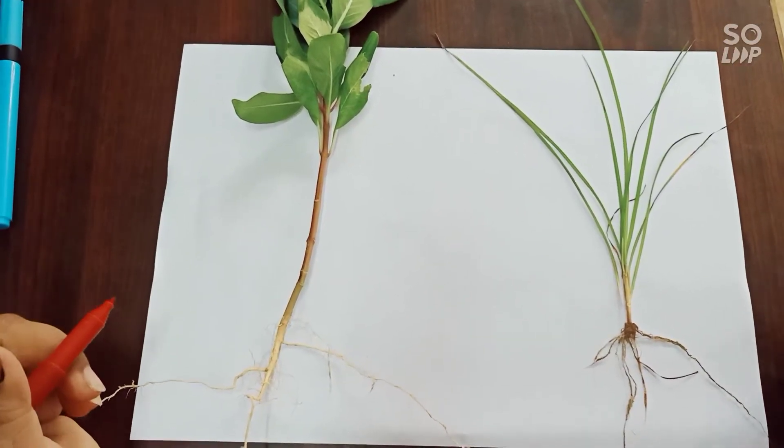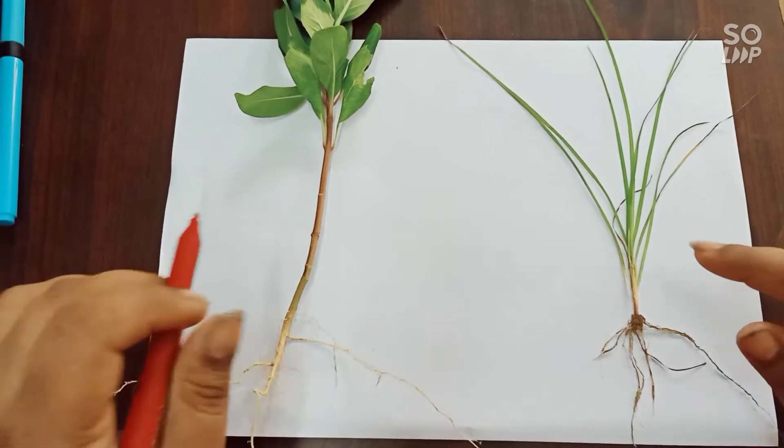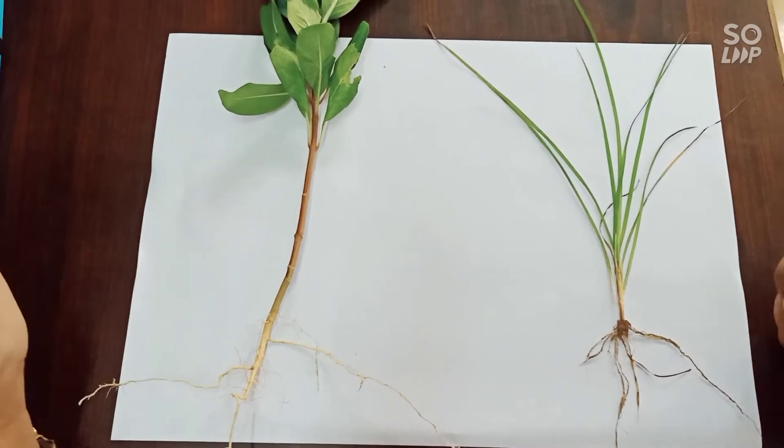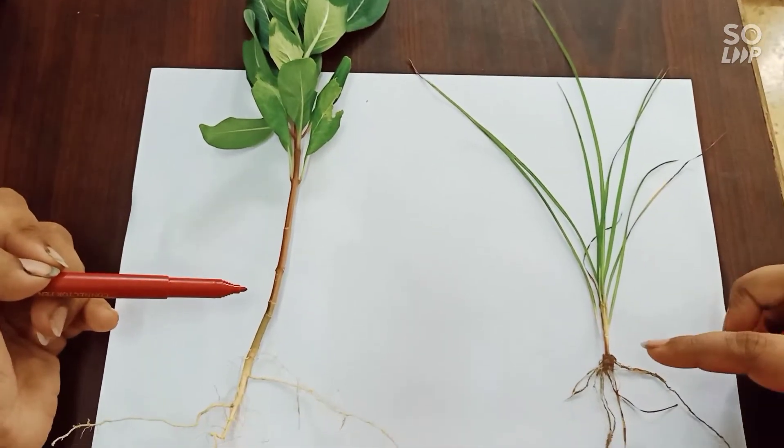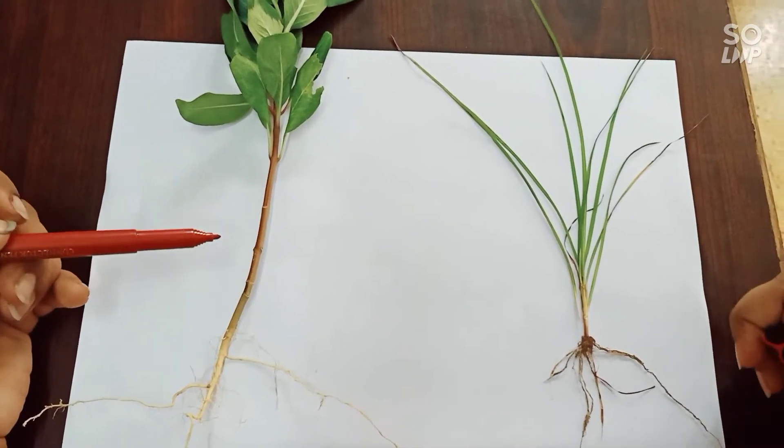So the plants which I showed you, I have taken out two plants from there. This is a plant and this is also another plant. It's actually a grass by the way and this is a plant.